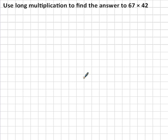This is the second in a series of videos on long multiplication, and in this one I'm going to show you how to multiply two two-digit numbers. Example number one: use long multiplication to find the answer to 67 times 42.